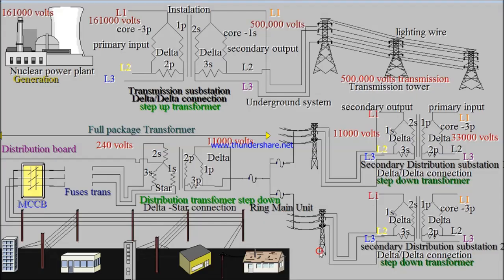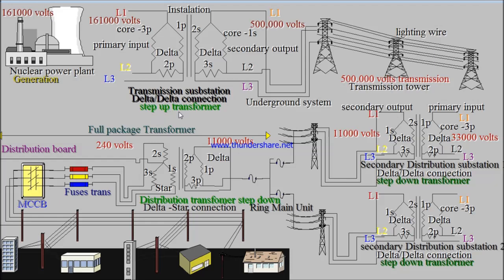We generate 161kV from a nuclear power plant. Then we move to the transmission substation. This is the transformer used in this transmission substation. When we have this 161kV, we send it to the transformer. The transformer is going to step it up from 161kV to 500kV. Then, through an underground system, starting from here, we have the transmission system. This is exactly the generation system.